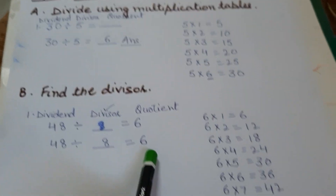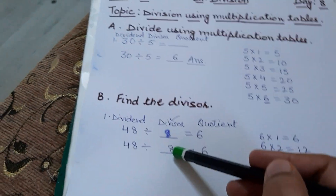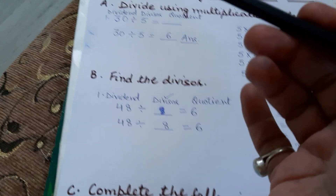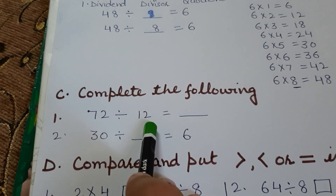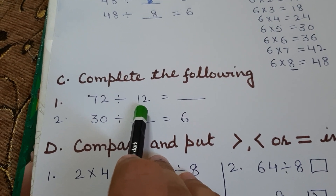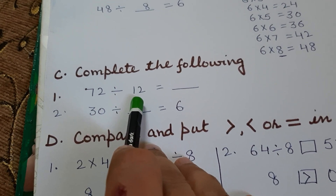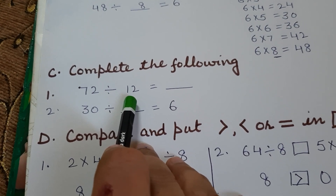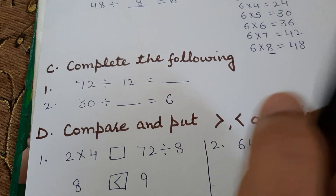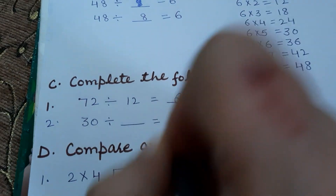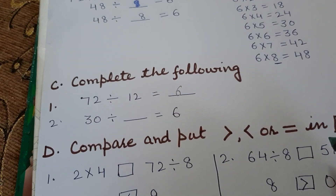All these sums are based on tables. The third type is a mixture of these two — somewhere you find the quotient and in other sums you find the divisor. So: 72 divided by 12 equals what. We will recall the 12-times table. 12 ones are 12, 12 twos are 24, 12 threes are 36, 12 fours are 48, 12 fives are 60, 12 sixes are 72. So 12 sixes are 72, meaning the quotient is 6.